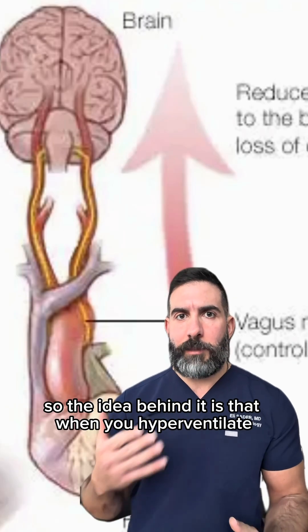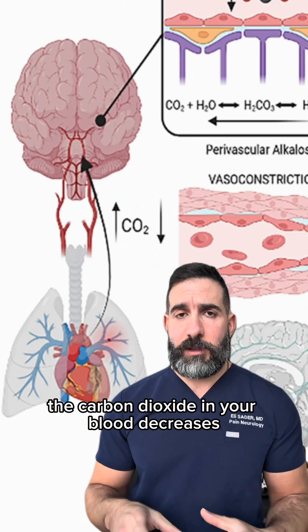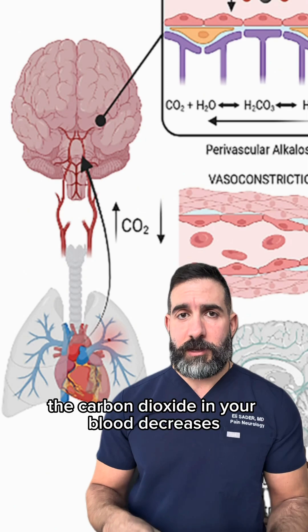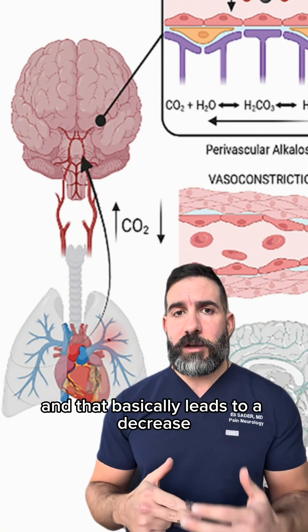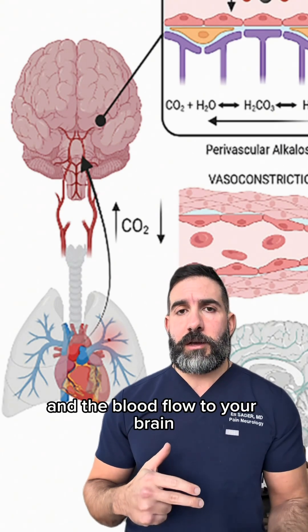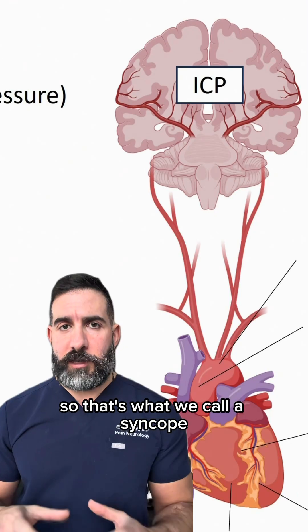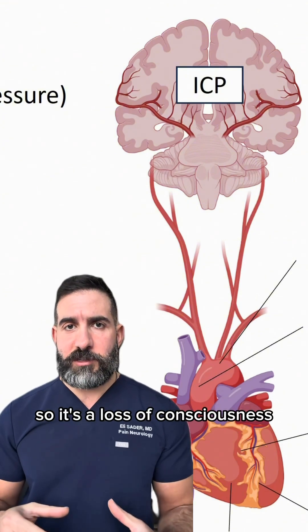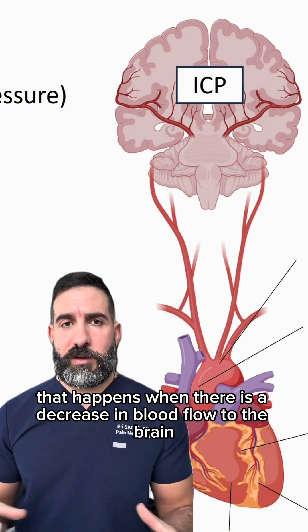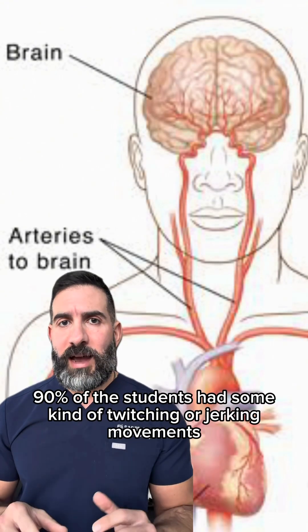The idea behind it is that when you hyperventilate, the carbon dioxide in your blood decreases, and that basically leads to a decrease in the blood flow to your brain. That's what we call a syncope — a loss of consciousness that happens when there is a decrease in blood flow to the brain.